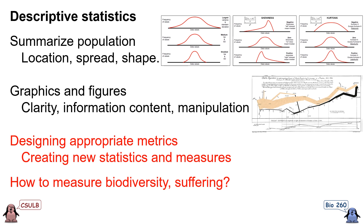For example, we know that biodiversity is a real thing, but how do we put numbers on it so that we can do our statistical analyses to compare different areas or before and after treatments? Or looking at a different topic, let's think about suffering. Much of medicine is done to reduce suffering, and having a way to measure suffering to compare different treatments, or before and after, would be very useful. But in contrast to length and mass, things like biodiversity or suffering are more complicated to measure.